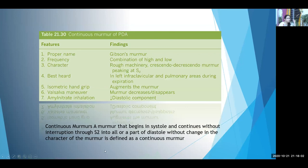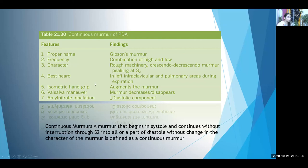Continuous murmur: a murmur that begins in systole and continues without interruption through S2 into all or part of diastole, without changing character, is defined as a continuous murmur. It may begin with or after S1, continue through S2, spill into diastole, and end before the next S1. The classical example is the murmur of PDA — also called a 'train in a tunnel murmur.' It reproduces the sound of a train moving through a tunnel.